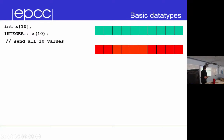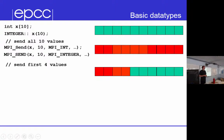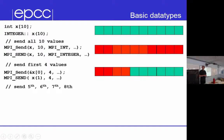So if I want to send all 10 values, I do int x[10] and send 10 integers — that's obvious. How do I send the first 4 values? x4 — you pass x with count 4. How do I send the 5th, 6th, 7th and 8th values?